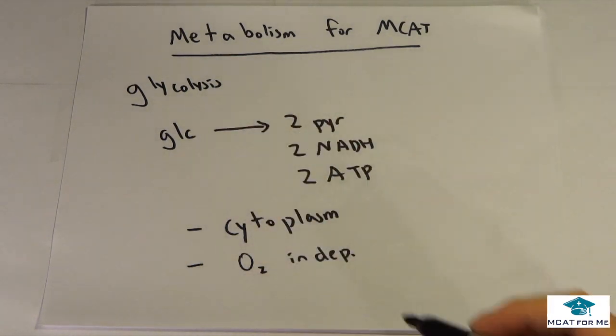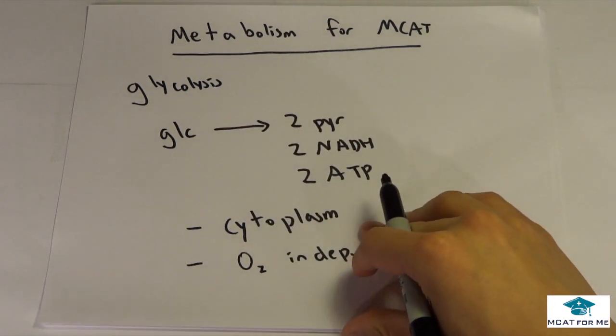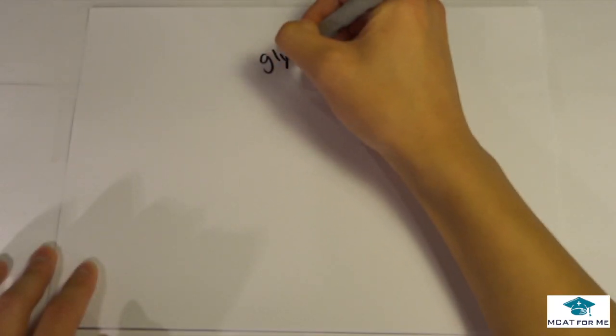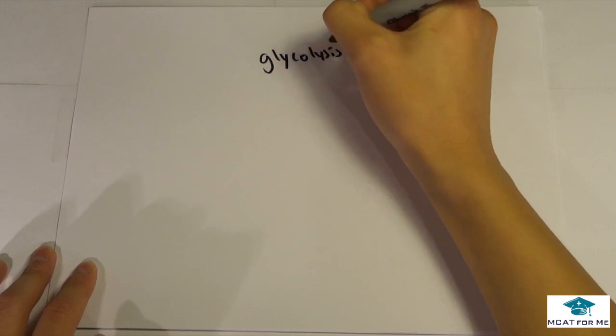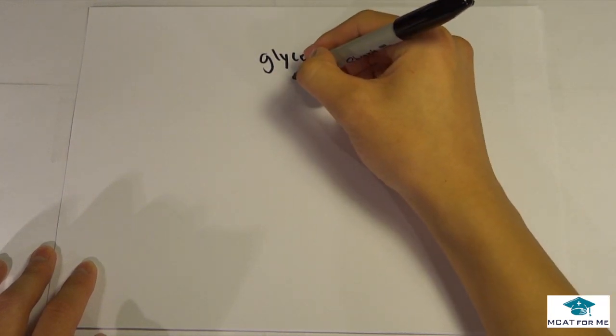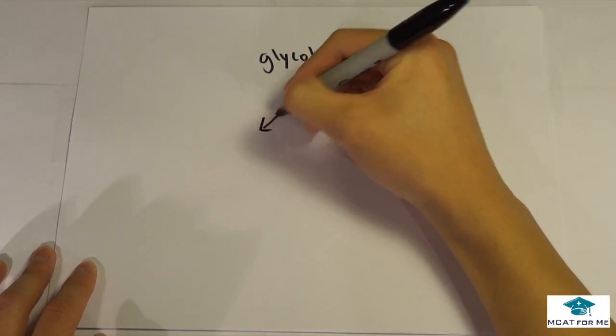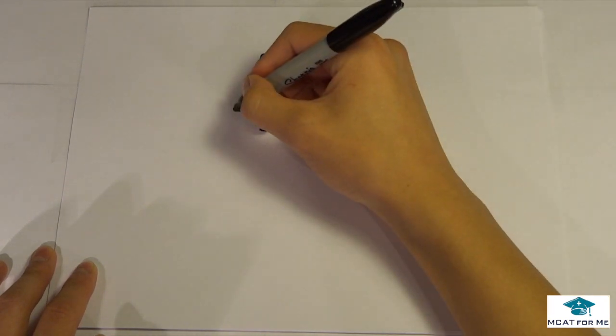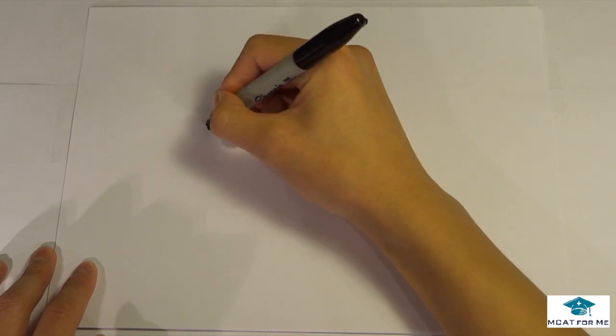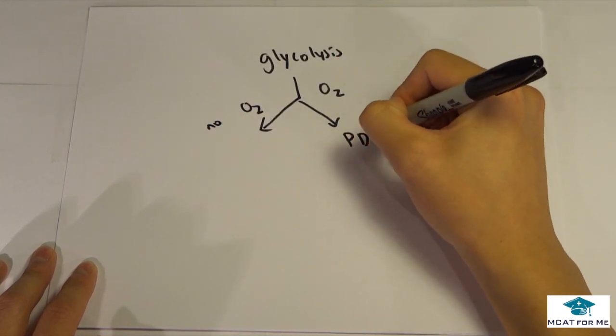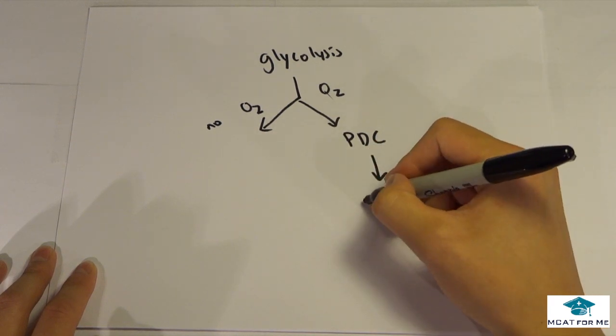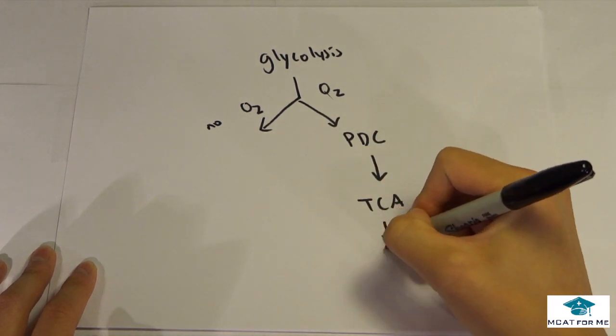Do you need to know all the enzymes that are involved? No, that's not going to be important for the MCAT. Glycolysis is going to occur regardless of whether or not it has oxygen, but we're going to come to this fork in the road where it's oxygen if present or oxygen is not present. From there we're going to go into the PDC cycle if we have oxygen, into the TCA and into the ETC.